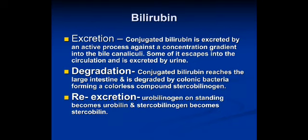Conjugated bilirubin is water-soluble and is excreted by an active process against a concentration gradient into the biliary canaliculi. Some escapes into the circulation and is excreted in urine. The conjugated bilirubin reaches the large intestine and is degraded by colonic bacteria, forming a colorless compound called stercobilinogen. The re-excretion produces urobilinogen, which on standing becomes urobilin, and stercobilinogen becomes stercobilin.